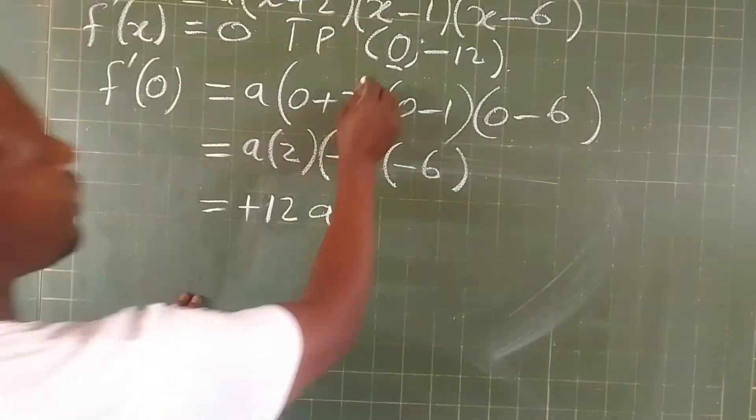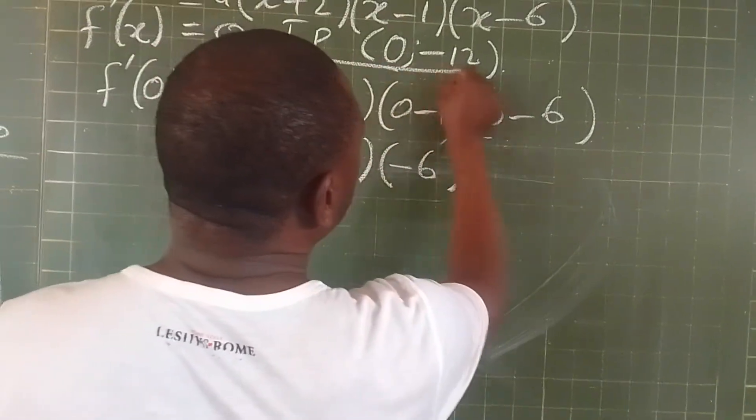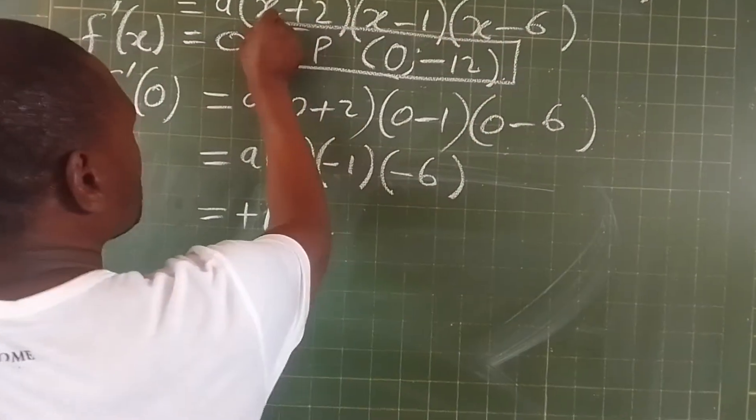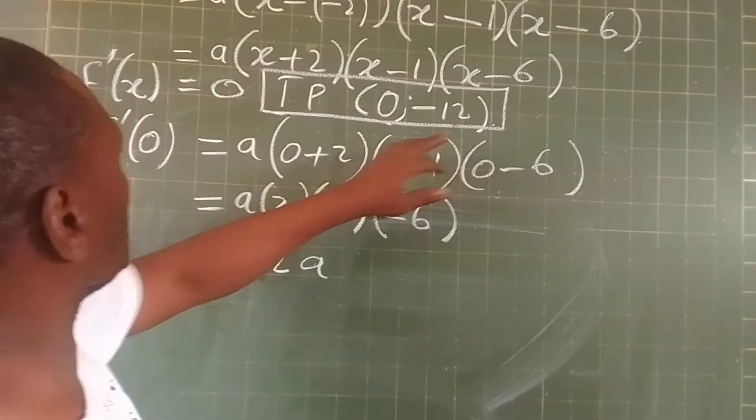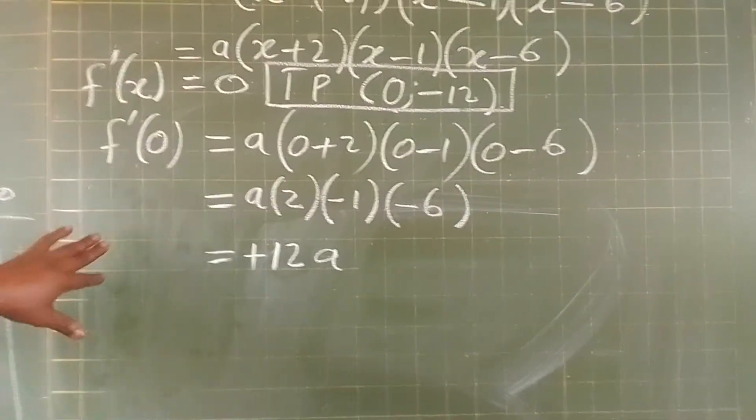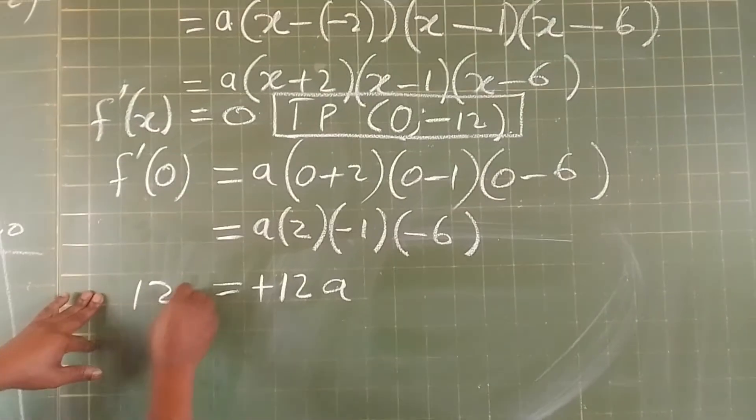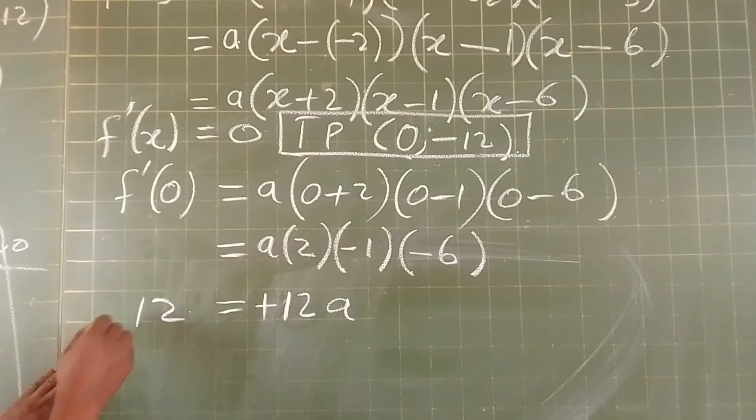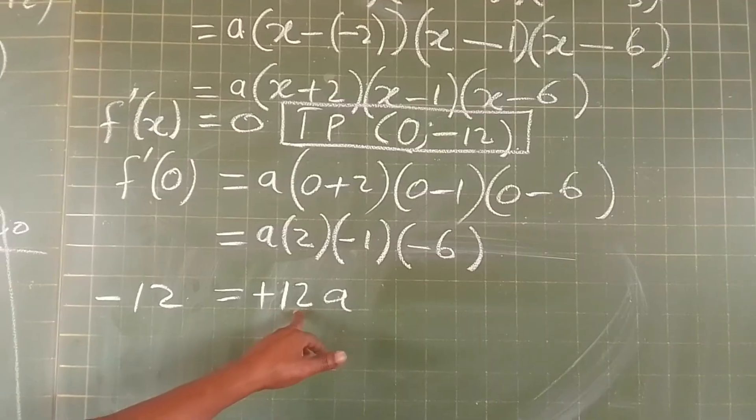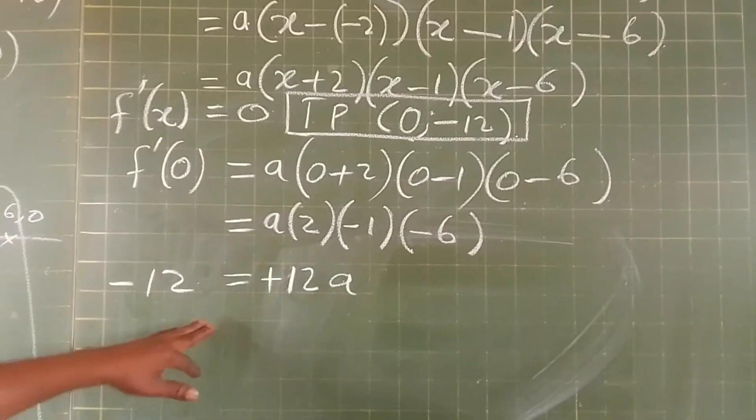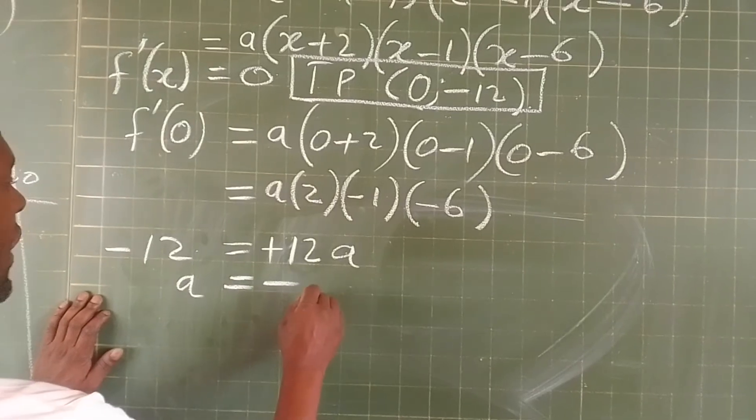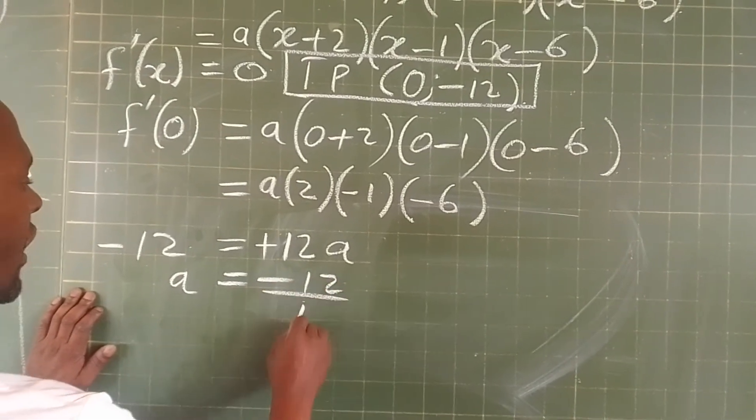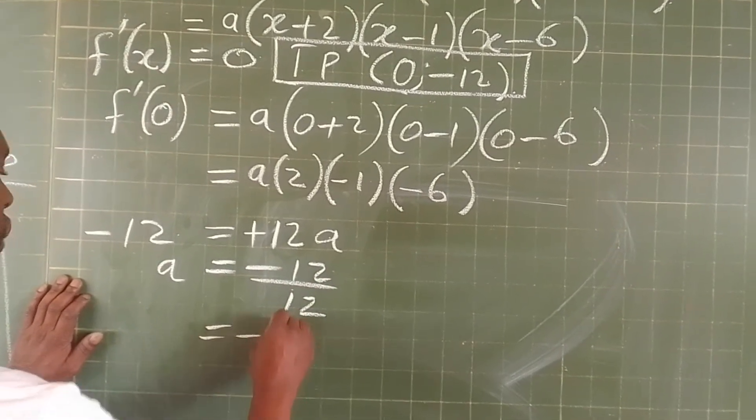Now, let's go back to our turning point. f(0) equals -12, so -12 equals 12a. We find the value of a here: a equals -12 divided by 12, which is -1.